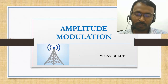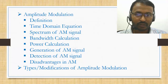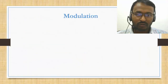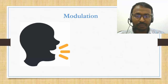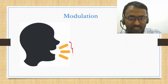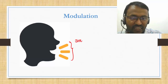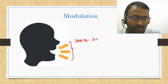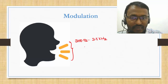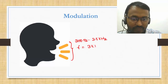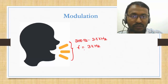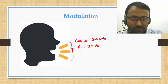Welcome to the analog communication course. In this video we will discuss the concept of amplitude modulation — what is modulation, and what is the necessity of modulation. Take an example: a person is speaking something. What is the frequency range of this particular signal? It can be anywhere between 300 Hz to 3.5 kilohertz. Take one particular case — say this signal has a frequency of 3 kilohertz.